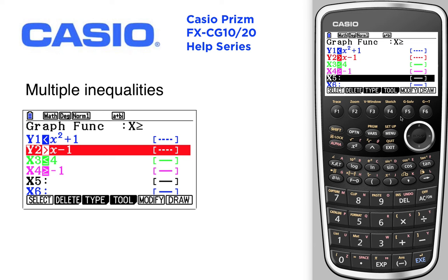Graphing multiple inequalities. For this example we're going to be looking at multiple inequalities. You type the following inequalities into your calculator: y1 = x squared plus one, less than y2, which is greater than x plus one, x is less than or equal to four, and x is greater than or equal to negative one. Sort of a linear programming setup.